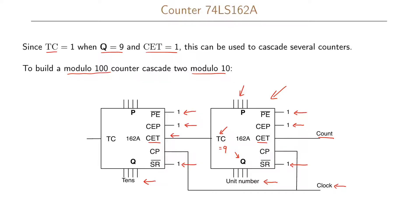The first counter counts from 0 up to 9. When it reaches 9 and receives another clock, it goes back to 0, while the second counter increments to 1. Then the first counter counts up to 9 again, and when it resets to 0, the second counter goes to 2, and so on. When the second counter reaches 9 and the first also reaches 9, both reset to 0. We have thus implemented a modulo 100 counter using two modulo 10 counters.